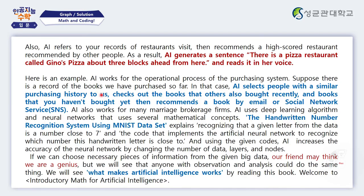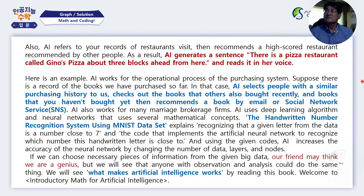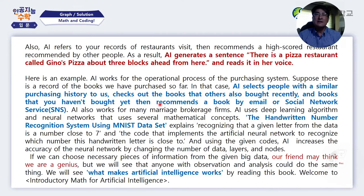There are many examples of AI these days. Here is one: AI works in the operational process of purchasing systems. Suppose there is a record of the books we have purchased so far. AI selects people with a similar purchasing history, checks out books that others also bought recently, and recommends books you haven't bought yet by email or social network. AI also works for many marriage brokerage firms, using deep learning algorithms and neural networks based on mathematical concepts we're going to learn.